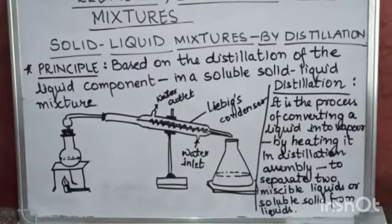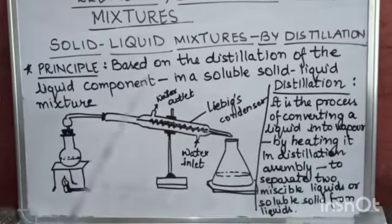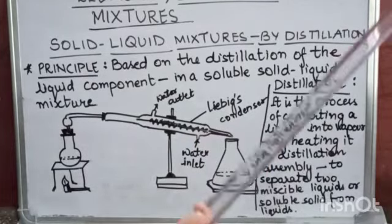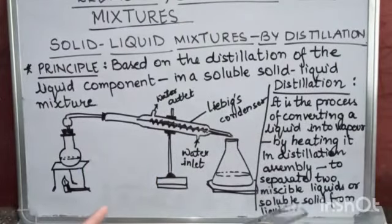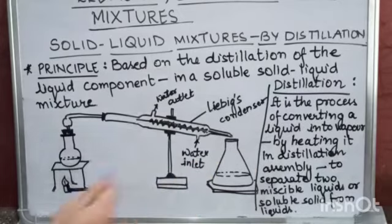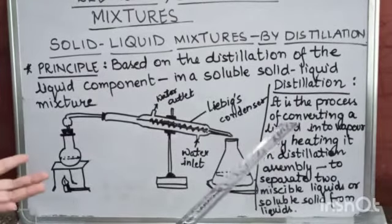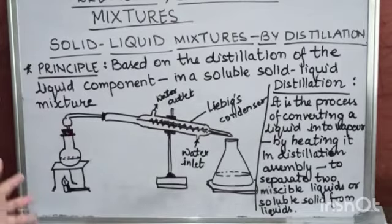For the separation of soluble solid from solid-liquid mixtures, a technique called distillation is used. Distillation is the process of converting a liquid into vapor by heating it in a distillation assembly. This method is used to separate soluble liquids or soluble solids from liquids, or to separate miscible liquids. For example, we can separate pure water from impure water using this distillation process.